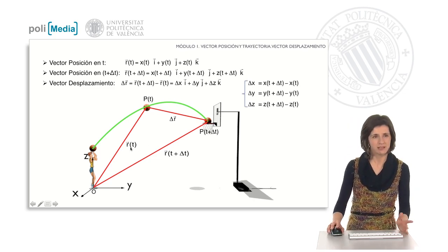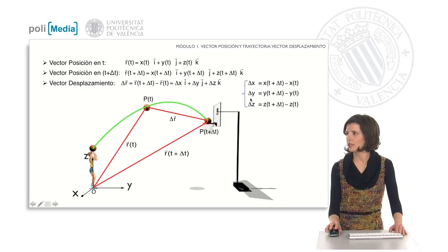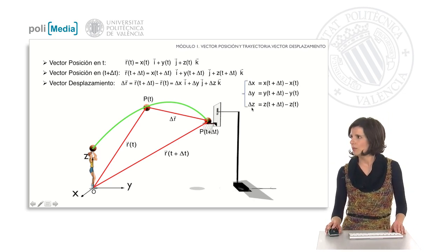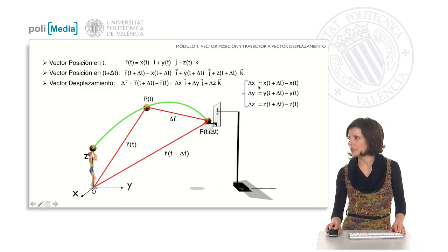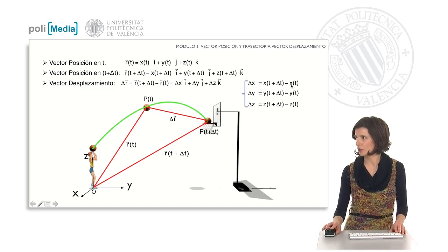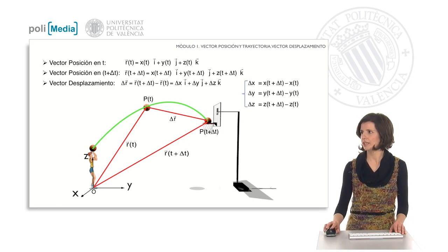This vector subtraction is done by components. If we call the increments of x, y, and z the Cartesian components of the displacement vector, this is calculated as follows: the x component is the x component of the position vector at instant t plus the increment of t, minus the x component of the position vector at instant t. We would do the same with the y and z components.